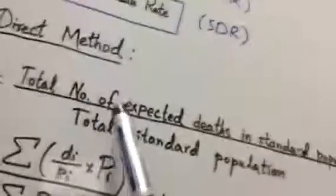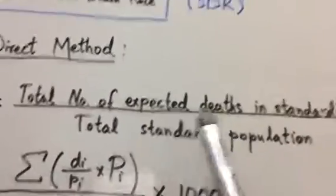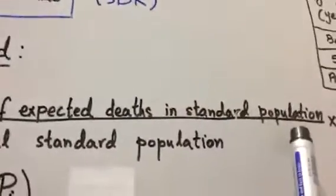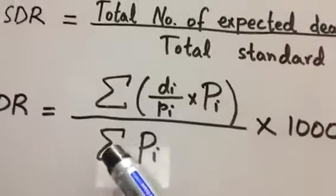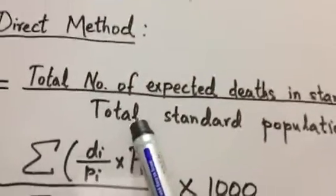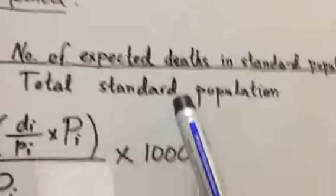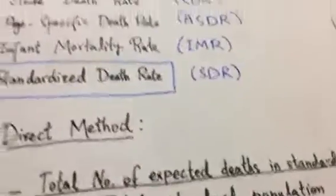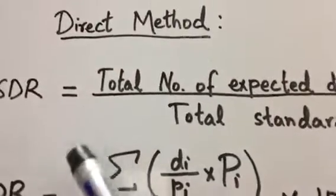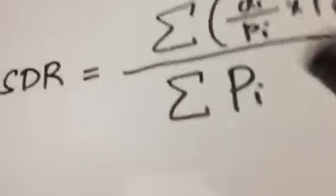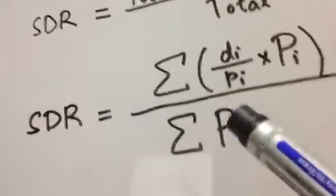The numerator is total number of expected deaths in standard population, and denominator is Pi, which is total standard population. So how we can calculate this numerator and denominator side? We need to make a chart through the given table.